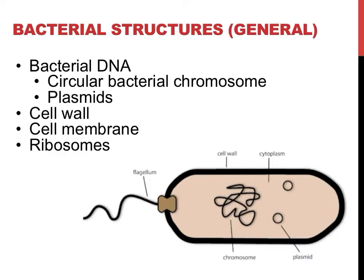Bacteria are very small and simple. They do not possess many of the organelles that eukaryotic cells would. The only structures that all bacteria possess are: DNA, a cell wall, a cell membrane, and ribosomes.